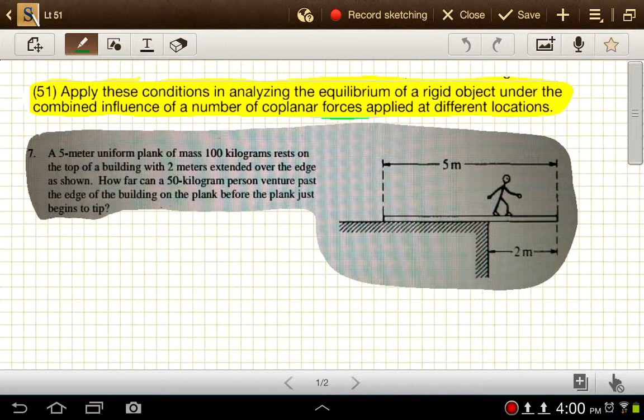The idea here is that there's nothing holding this plank on this cliff, whatever this is, top of a building I guess, except gravity, and it's not bolted into place here. And so as this person gets farther and farther out, we expect that at some point this whole thing is going to start to tip downward and this person is going to have a really bad day. The question is, how far out can they go before that happens?